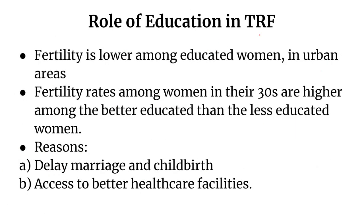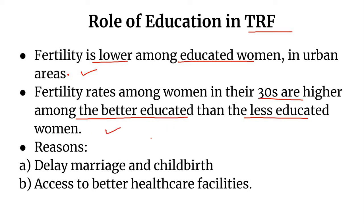Education also plays a role with regard to fertility rates among women. Although in general fertility is lower among educated women in urban areas, fertility rates among women in their 30s are higher among the better educated than the less educated. This is because better educated women have been able to delay marriage and childbirth, while access to better healthcare facilities enables women to have children at a later age.